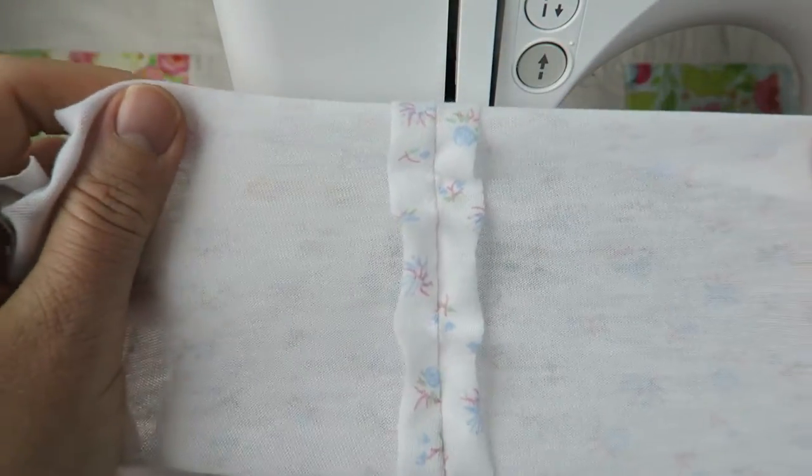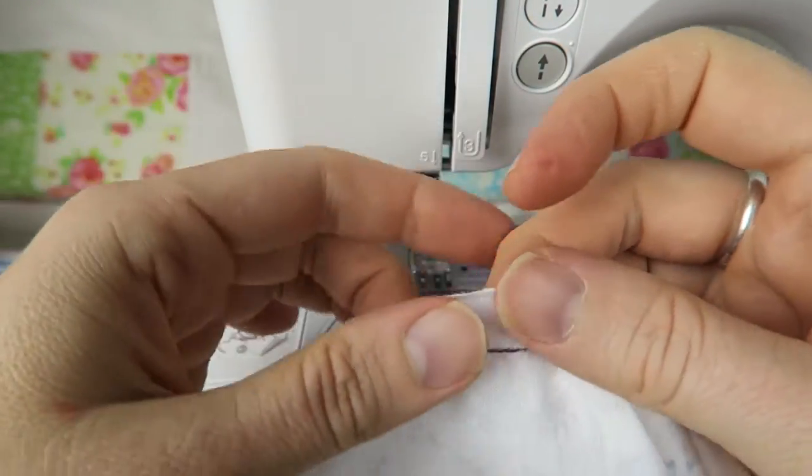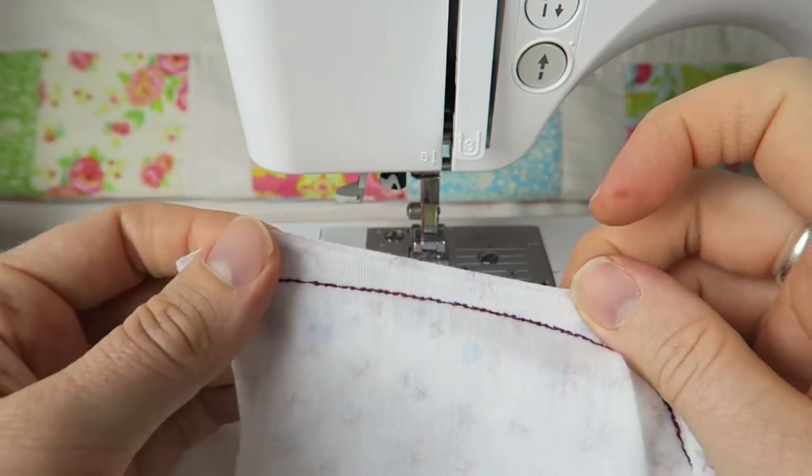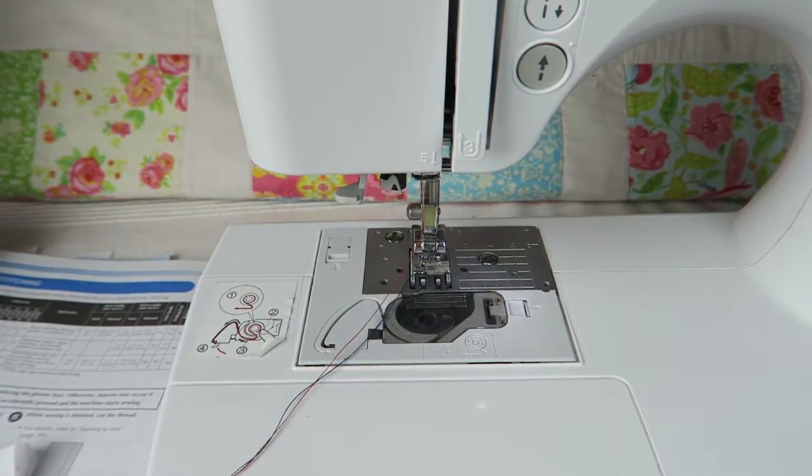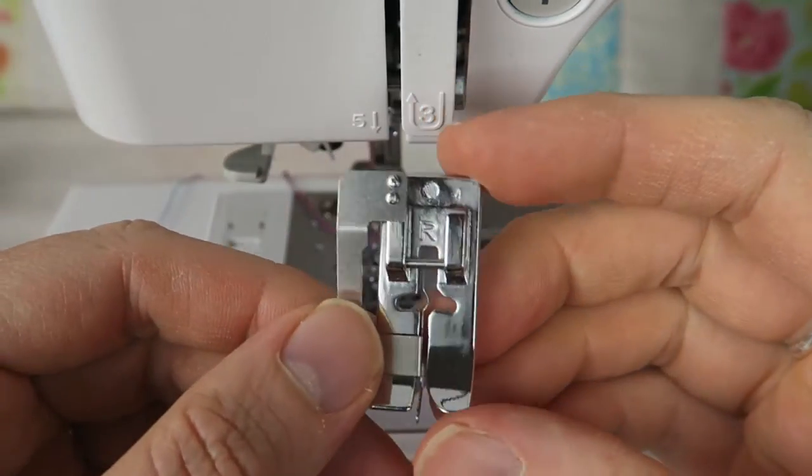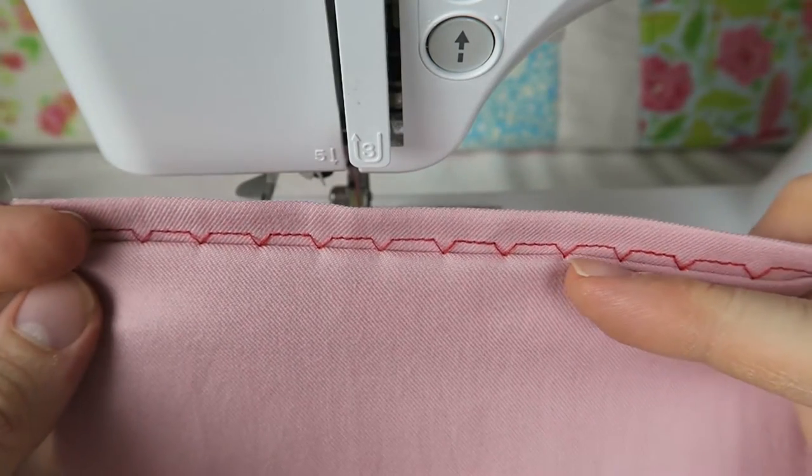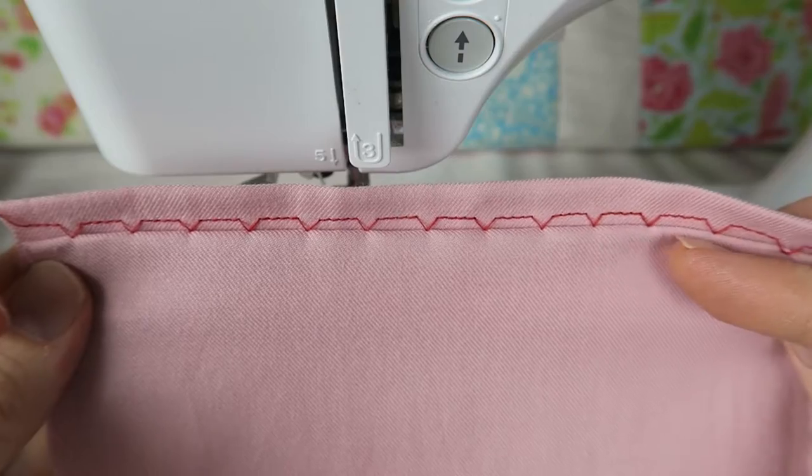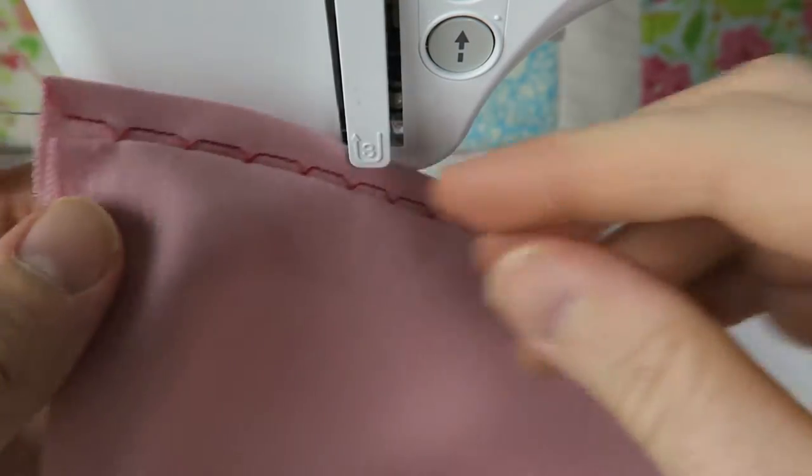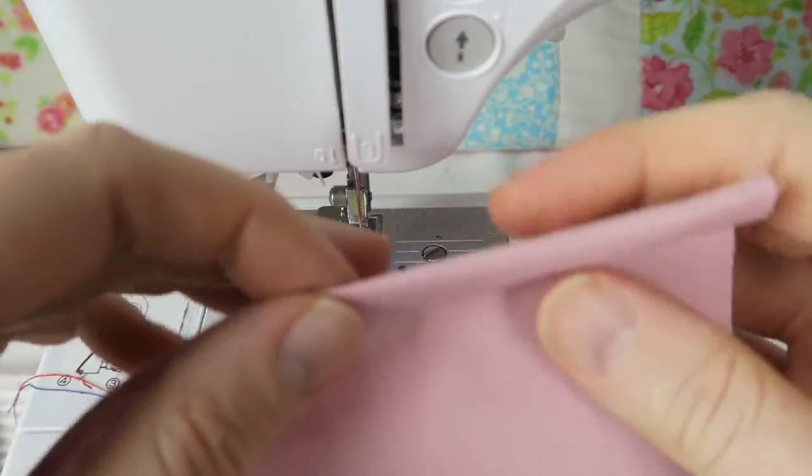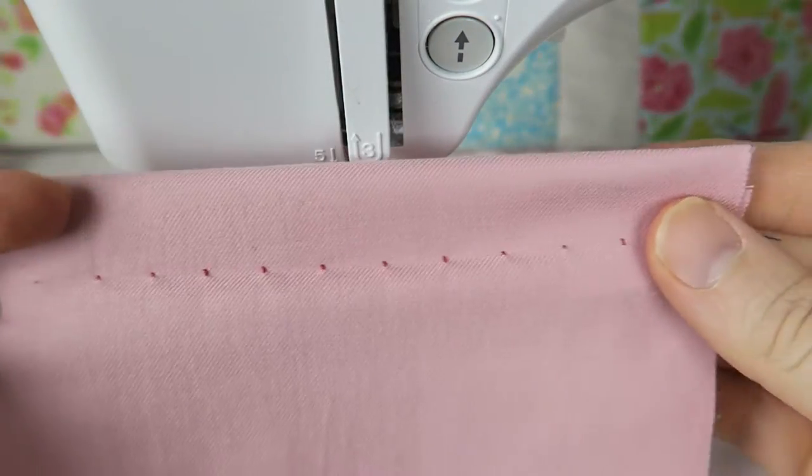If you're ever in doubt which sewing foot to use for what, just have a look in your manual or have a look online for your sewing machine manual. Next we're going to use the blind hem foot R, which is used for blind stitching. It's really handy when you want to sew pants and you don't want the stitching to show. It's just a really nice way to finish your edges.